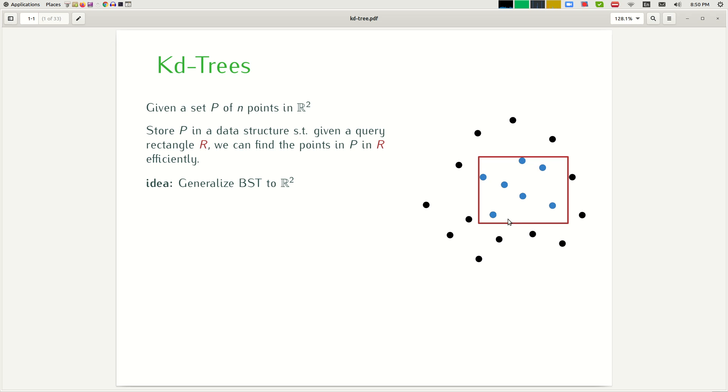The idea that we have is kind of like generalizing a binary search tree to two dimensions. One way to look at a binary search tree is to think of it as having a set of one-dimensional points on the unit line and then split it in half with n over two to the left and n over two to the right and then you recurse. You split in two to get n over four, n over four and so on. And you continue this until you end up with constant number of points.